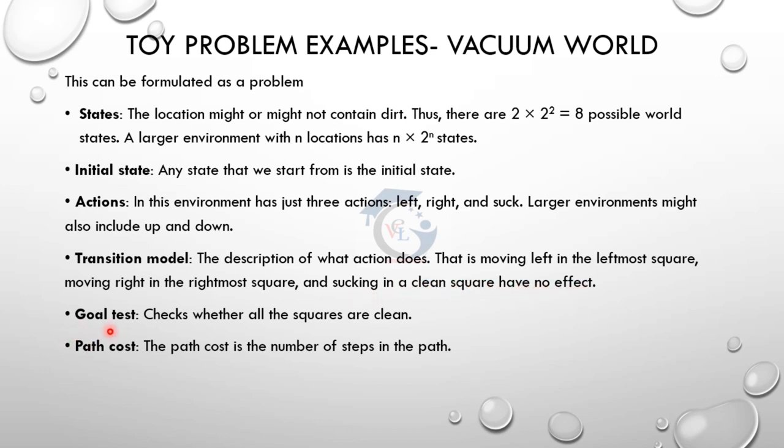The goal state is when all squares are clean. Then there is the path cost. If we go through the steps, we count the number of costs and calculate the total path cost.